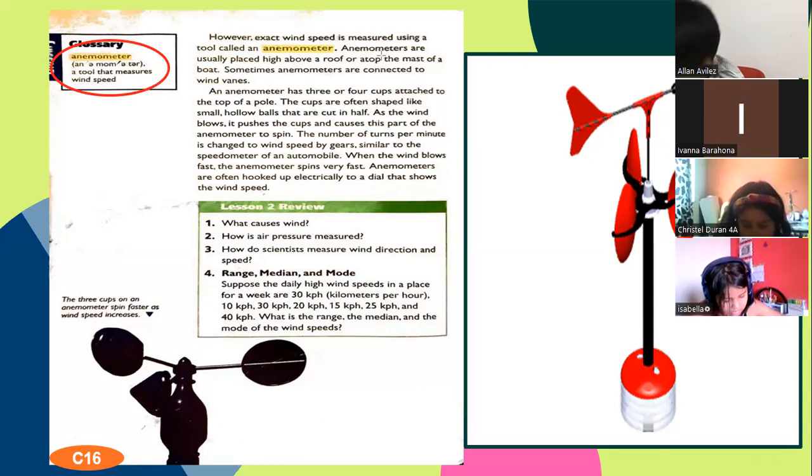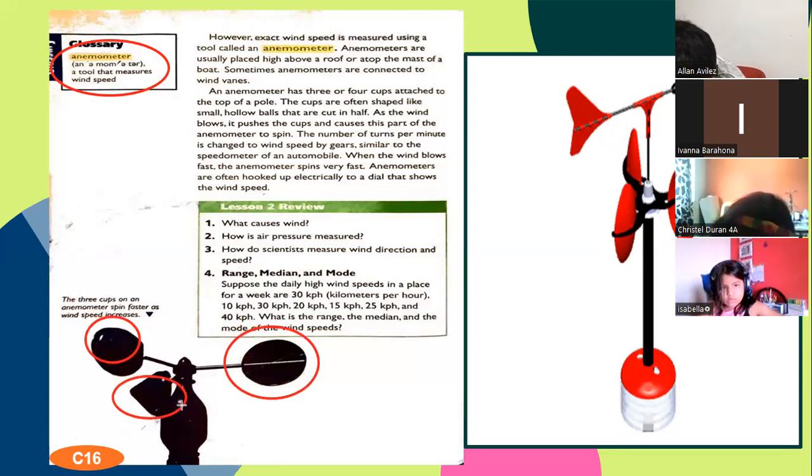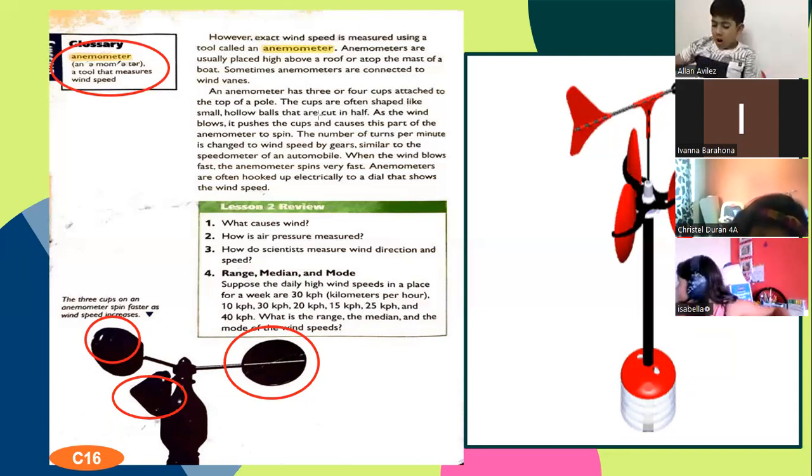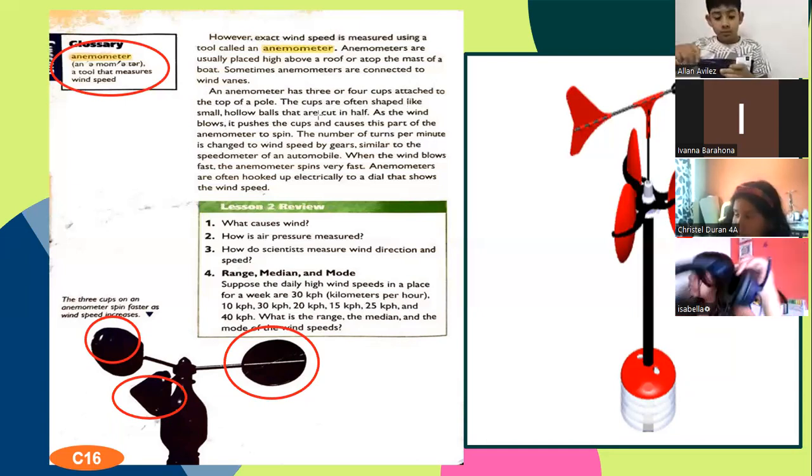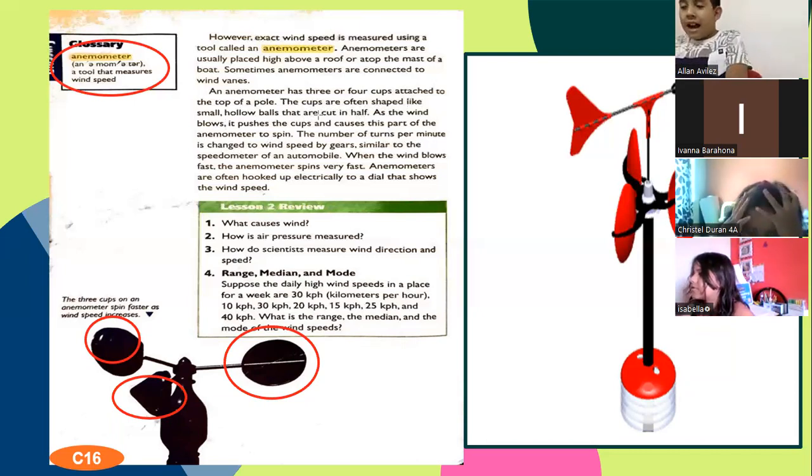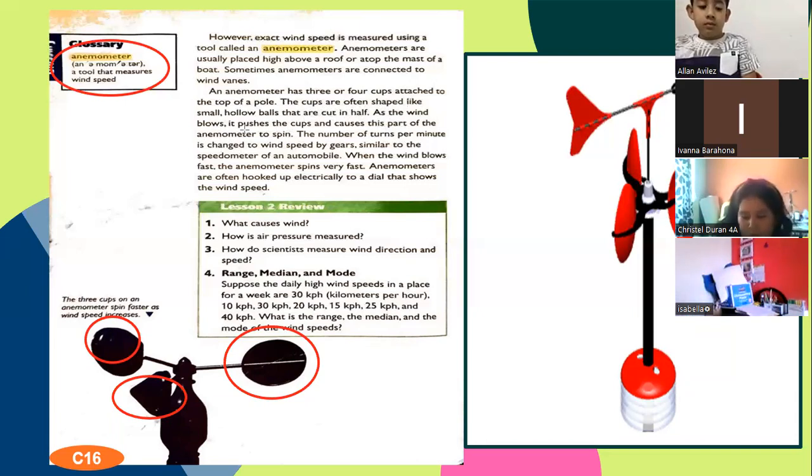There is an anemometer. Sometimes anemometers are connected to wind vanes. An anemometer has three or four cups. Here you have an example. This is one cup, two cups, and three. So these anemometers have three cups attached to the top of a pole. The cups are often shaped like small hollow balls that are cut in half. It's like half of a ball, like a little guacalito. As the wind blows, it pushes the cups and causes this part of the anemometer to spin.